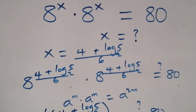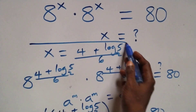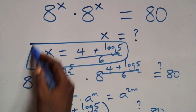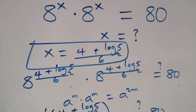Therefore we conclude that x equals (4 plus log 5 base 2) all over 6 satisfies the given problem. Thank you for watching — don't forget to subscribe for more videos, turn on the notification bell, share this video, and give a thumbs up. Please leave your comments. See you next class, bye for now.